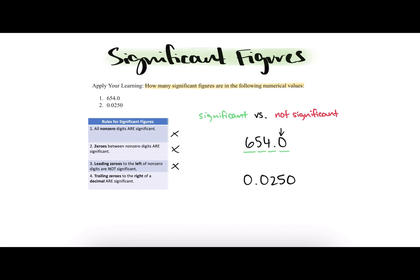So when we count up how many significant figures we have, we have three, four, four total significant figures in 654.0.